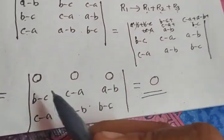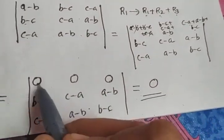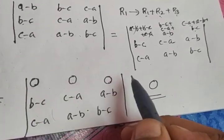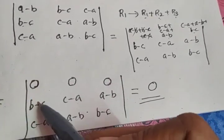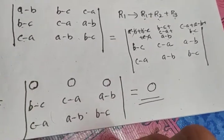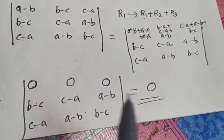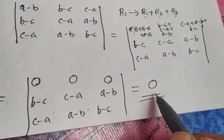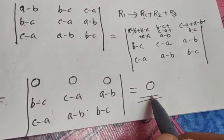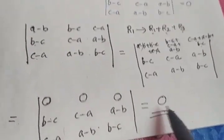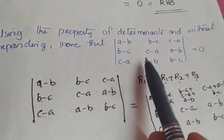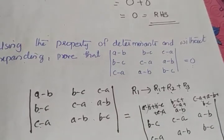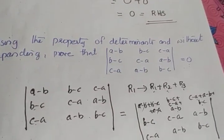If one row or one column contains all elements as 0, simply write the determinant value as 0. Hence we prove that LHS is equal to 0.